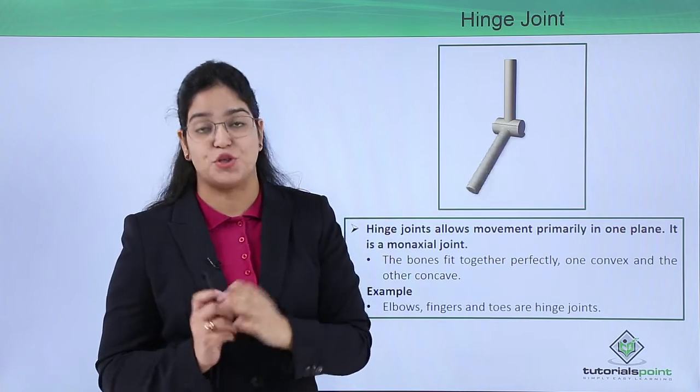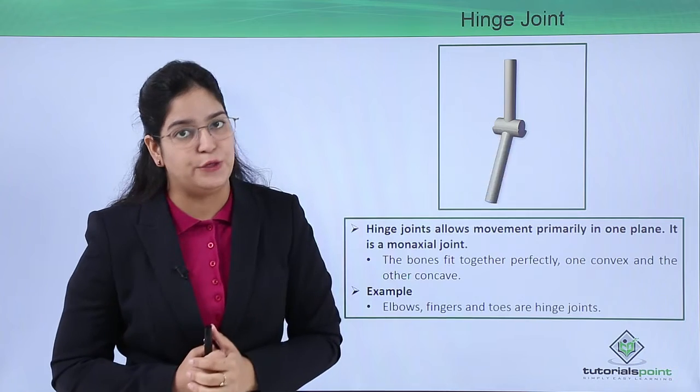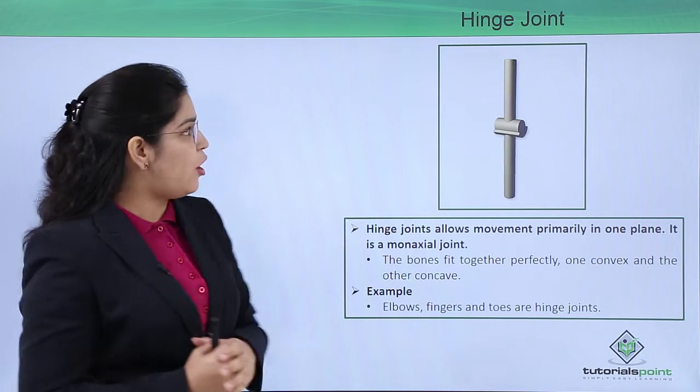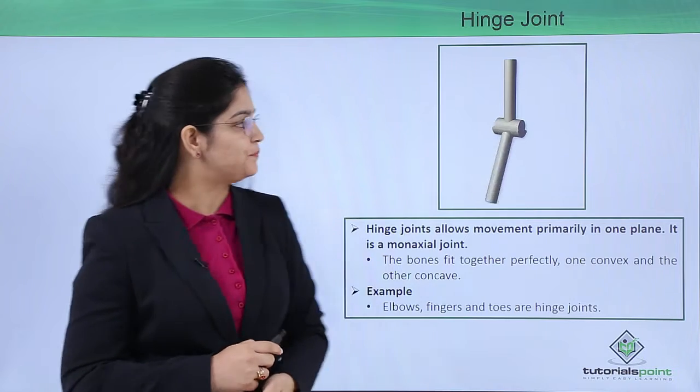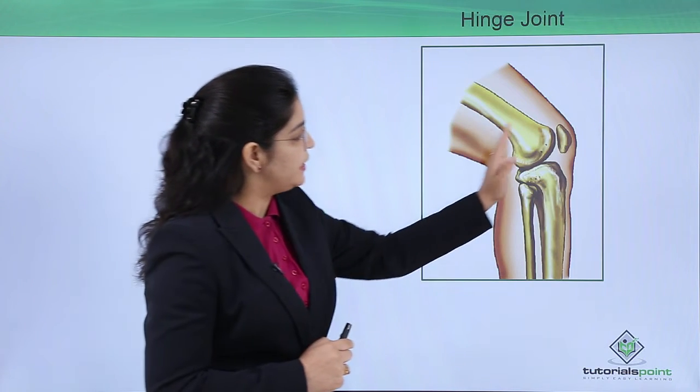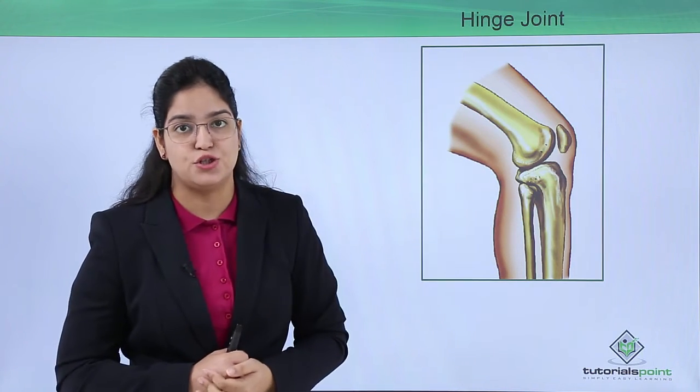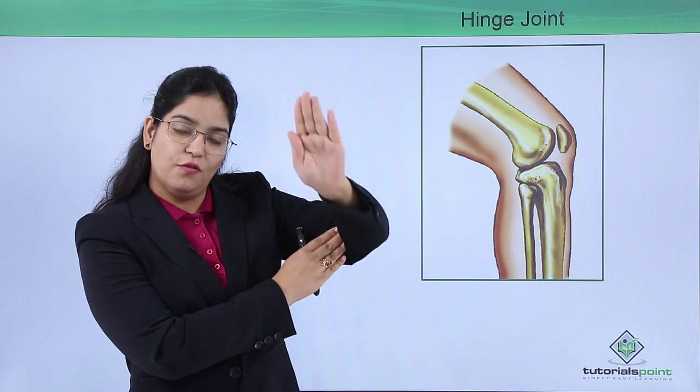Examples of this hinge joint are the elbow, fingers, and toes. Here you can see your knee is showing the hinge joint so that your leg can move easily.